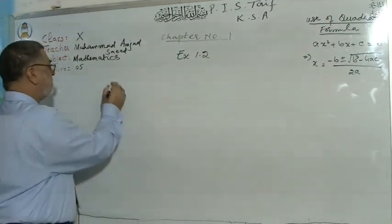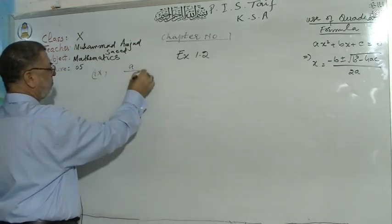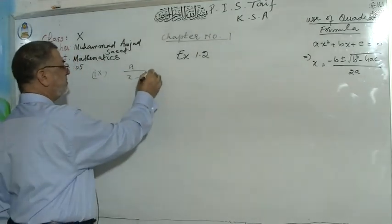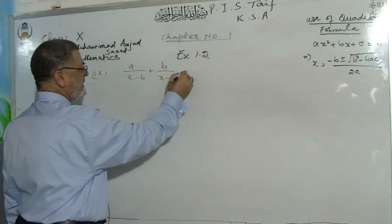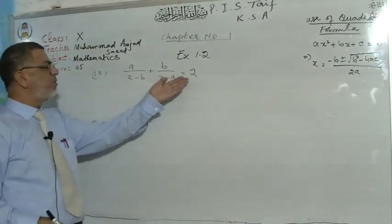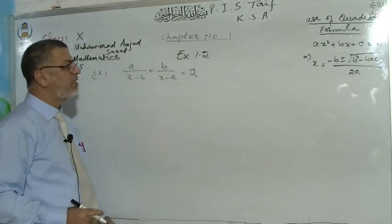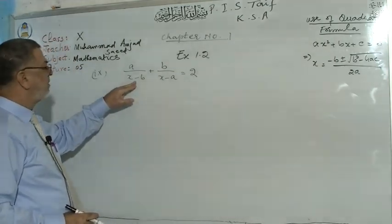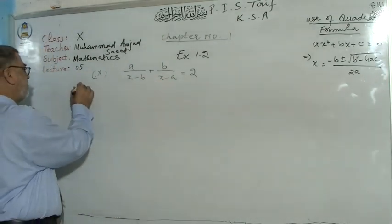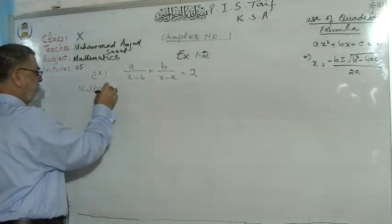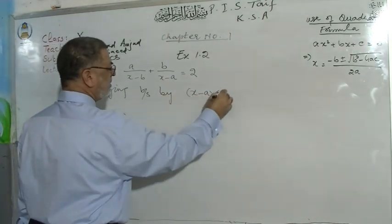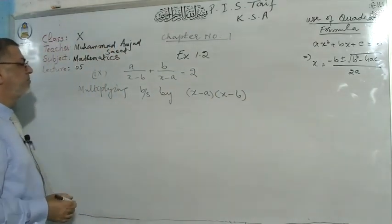Part number 9: a/(x−b) + b/(x−a) = 2. Basically 2 means 2 over 1. The LCM of (x−a) and (x−b) — they are two different terms so they are simply multiplied. The LCM is (x−a)(x−b). Multiplying both sides by (x−a)(x−b).